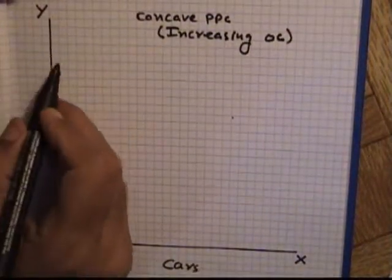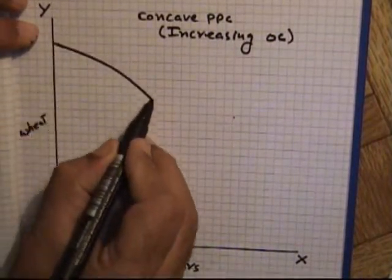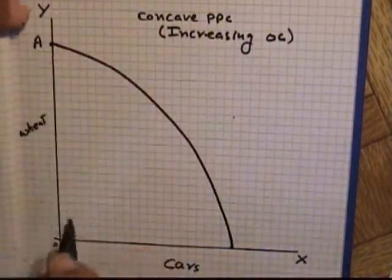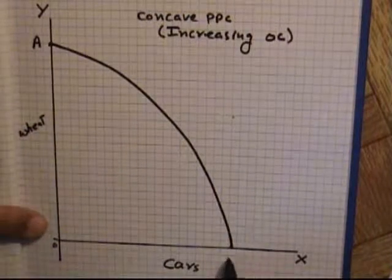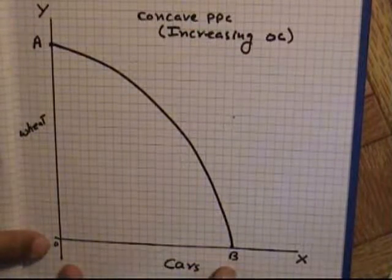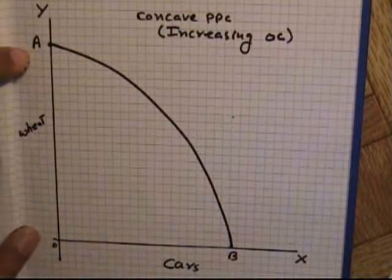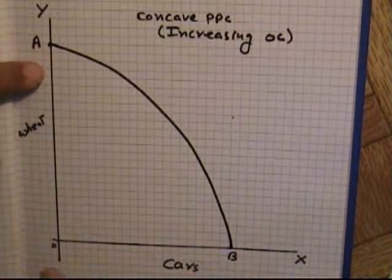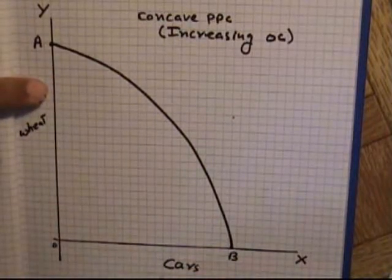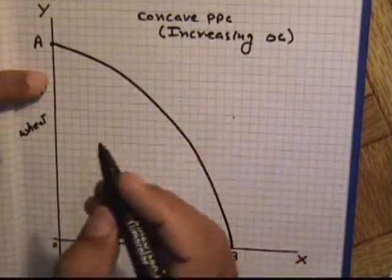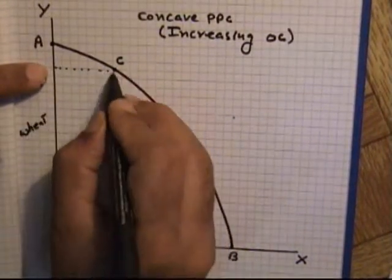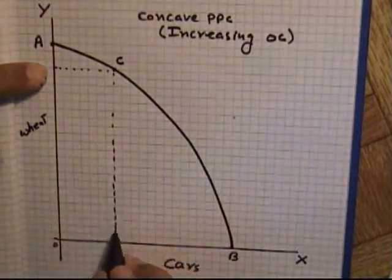The Concave Production Possibility Curve is not a straight line. Point A shows the maximum production of wheat and point B shows the maximum production of cars. If all resources are engaged in the production of cars, then the country cannot produce wheat — the opportunity cost of total car production is the total production of wheat, and vice versa. We can assume different points: point C assumes production of wheat at W1 and cars at C1.